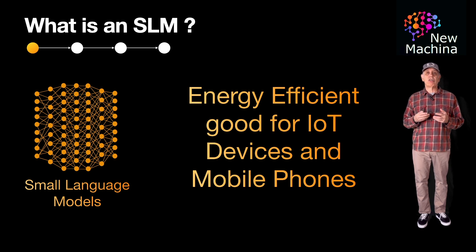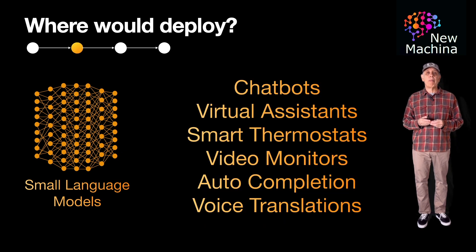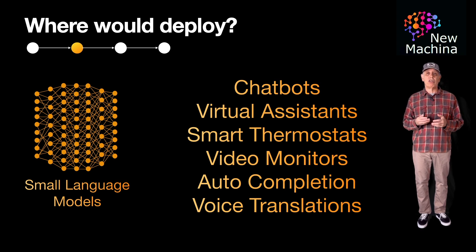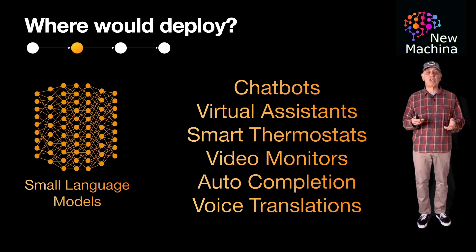Small language models are versatile and can be used in a variety of applications. Here are a few example use cases: chatbots and virtual assistants; supporting IoT edge computing devices such as smart thermostats or home video monitors; and supporting mobile phones with capabilities such as text auto-completion or real-time voice translation.